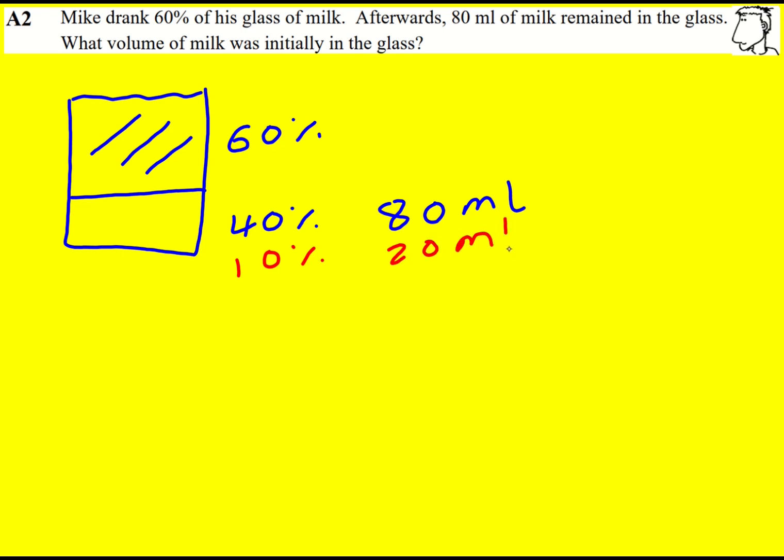So 100%, the original amount, would then be times by 10, which is 200 millilitres. That's how much Mike would have had originally in his glass of milk.